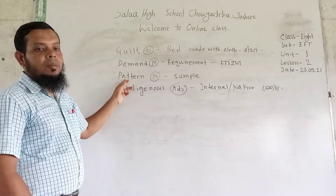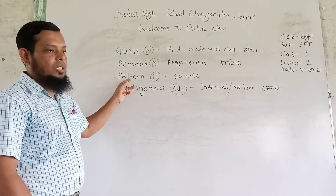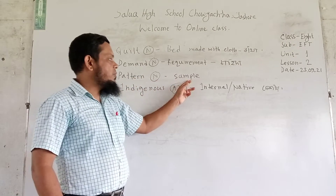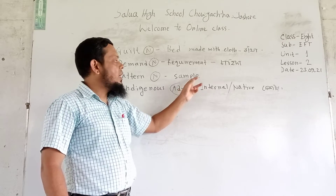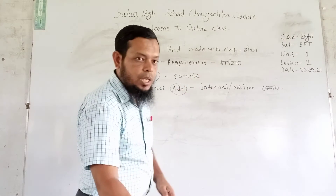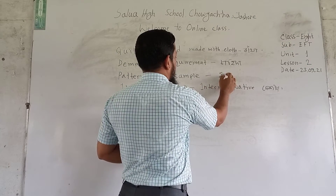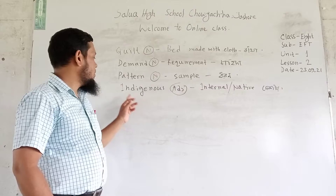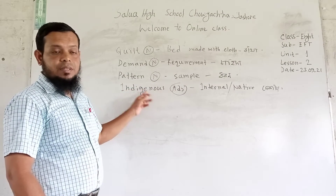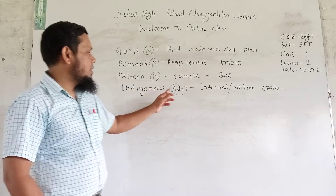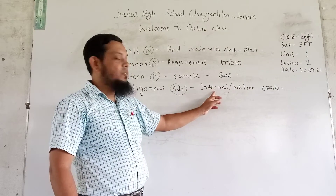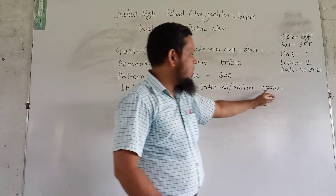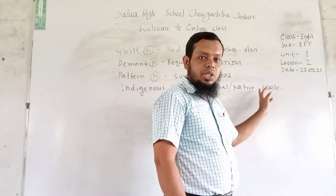The next word is: Pattern. The pronunciation is 'Pattern.' It is also a noun. The English meaning is: Sample. The last vocabulary is: Indigenous. It is an adjective. The English meaning is: Eternal or native. The Bangla meaning is: Deshiyo.